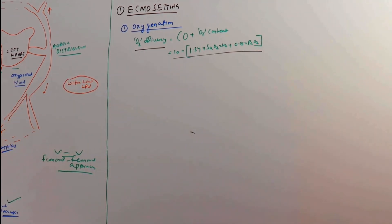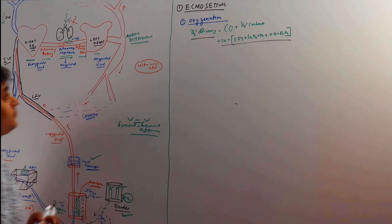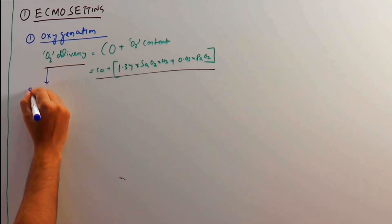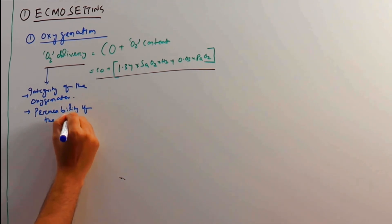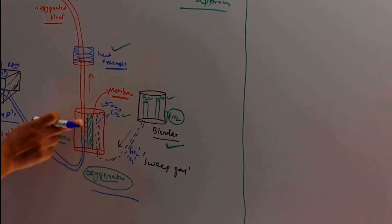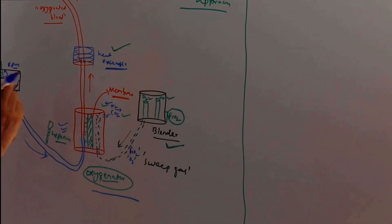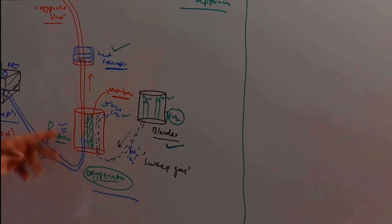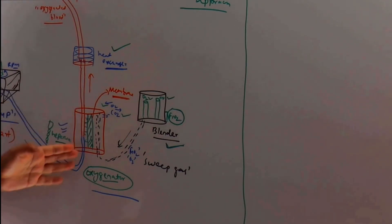For proper oxygen delivery to happen, the membrane has to be permeable — this is the integrity of the oxygenator, also known as permeability of the membrane. In the oxygenator, we have a membrane, and this membrane has to be permeable enough to allow gas exchange. When thrombosis forms — if anticoagulation is not enough, or the patient has heparin-induced thrombocytopenia or DIC — there will be micro-clogging of the membrane and gas exchange will be hampered.